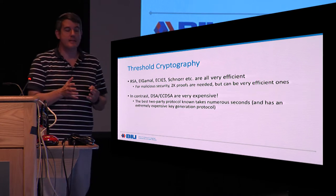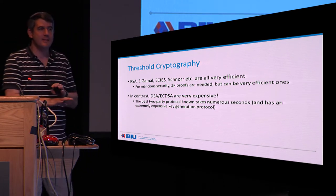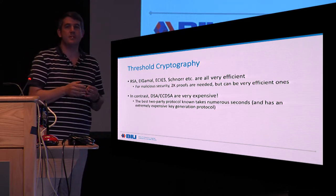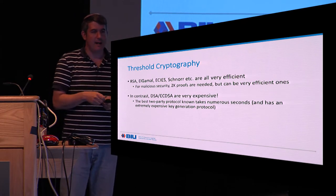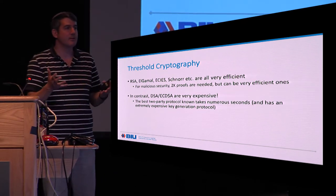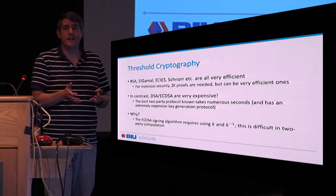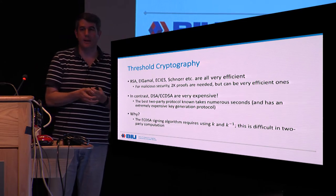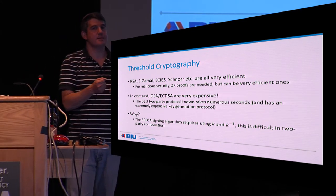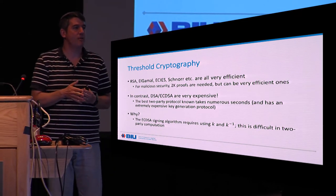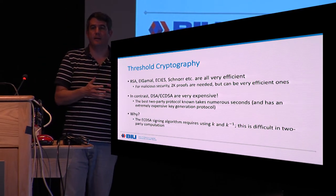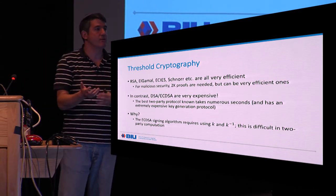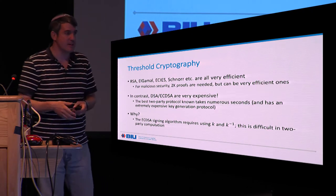In contrast, DSA and ECDSA are very expensive. I'm going to talk about ECDSA, but it's exactly the same for DSA because everything is generic in the group. The best two-party protocol takes numerous seconds for a single signature — a very significant overhead — and it also has an extremely expensive key generation protocol. The reason ECDSA is so much harder is that it has this unusual feature: you have to generate a random value K and its inverse, and these must be secret. It's actually non-trivial in multi-party computation to generate shares of a random value and its inverse.